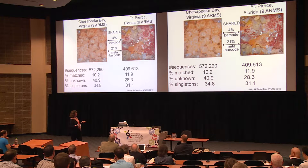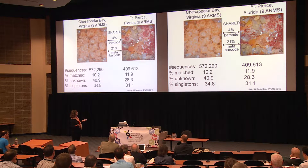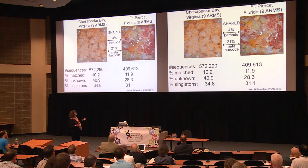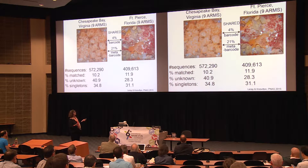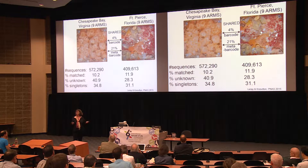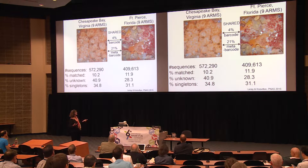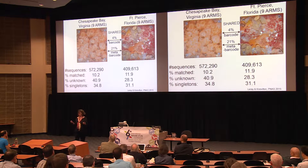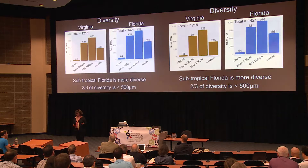Another interesting finding: the larger conventionally barcoded things share only about 4% of OTUs between Florida and Virginia, which is what I would have expected. But if you look at the metabarcoded community, it's actually 21% similar. We'll get to that again a little bit later.